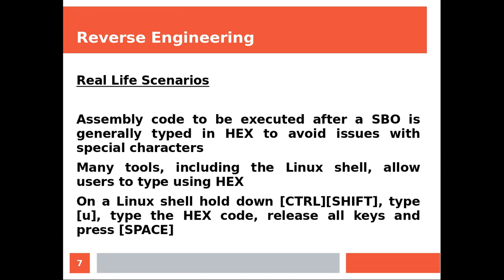Assembly code to be executed after a stack buffer overflow is generally typed in hexadecimal to avoid issues with special characters. Many tools including the Linux shell allow users to type using hexadecimal. On a Linux shell, hold down Ctrl+Shift, type U, type the code, then release all keys and press space. Let's try.